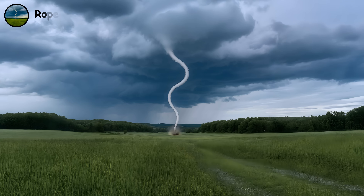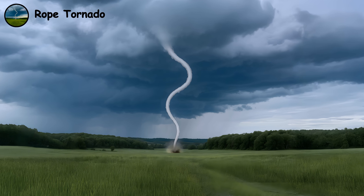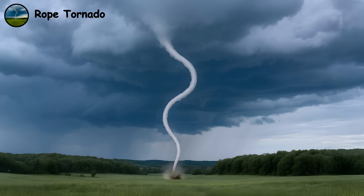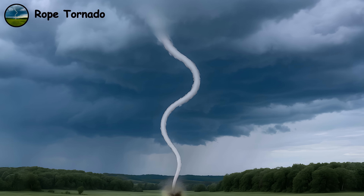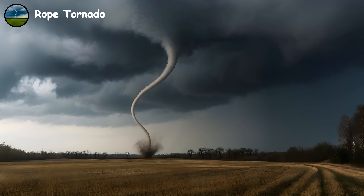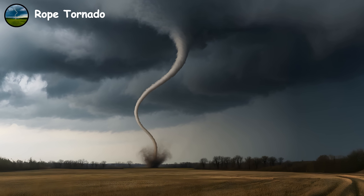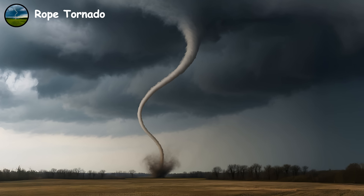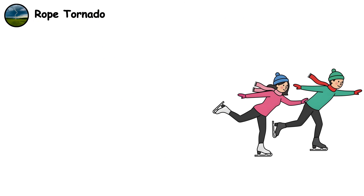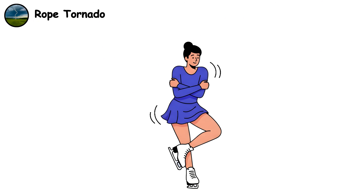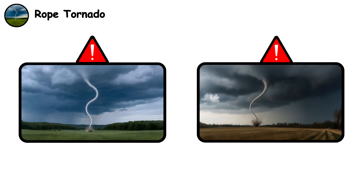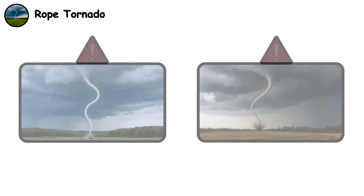Rope tornado. The rope tornado represents the dissipating stage of a tornado's life cycle. The narrow funnel may intensify momentarily during the dissipation process as angular momentum is conserved in the shrinking vortex, similar to how ice skaters spin faster when pulling their arms inward. Therefore, despite its weak and fragile appearance, this one remains dangerous until completely dissipated.